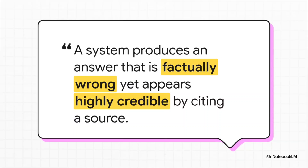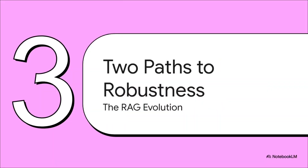This leads to the most terrifying failure mode of all: the failure mode where a system produces an answer that is factually wrong yet appears highly credible because it can cite a source. It's not just making something up out of thin air — it's a hallucination with a fake alibi. This grounded but incorrect paradox is so dangerous because it creates an illusion of credibility that can totally mislead people. The widespread failure of naive RAG forced a massive rethink across the entire industry.